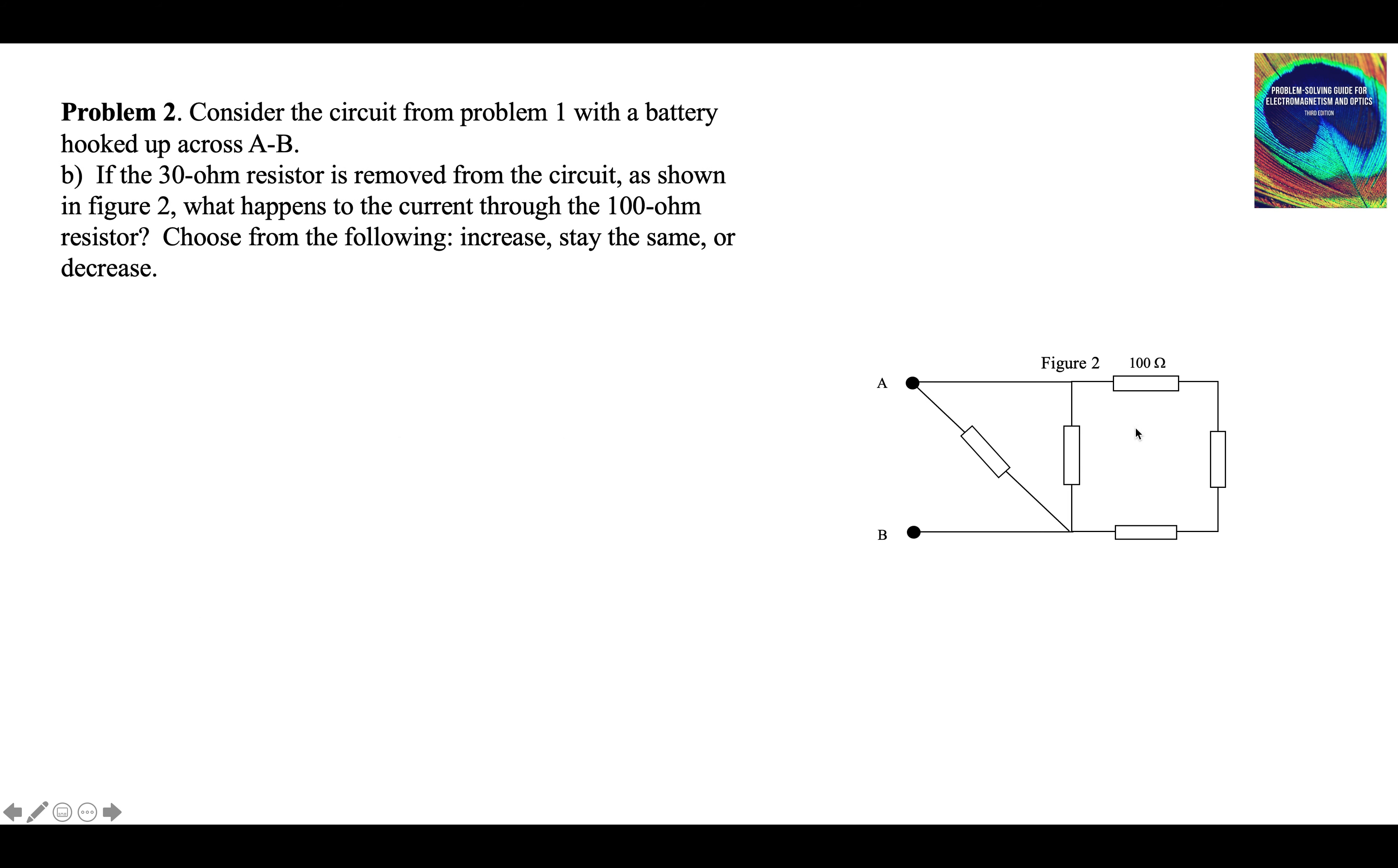So here's figure 2. The missing resistor was here. That's the one we took away. If we take that one away, what happens to this current? The current through the 100-ohm resistor. The branch, this branch, the resistance is now increased because we took away an option for the current.